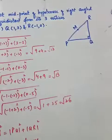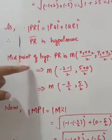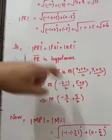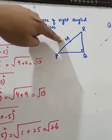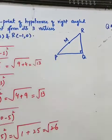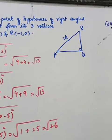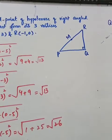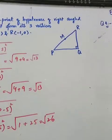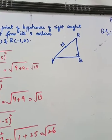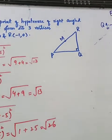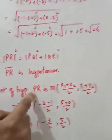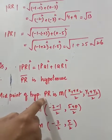Midpoint of hypotenuse PR is M. Midpoint formula apply karte hain: x1 plus x2 by 2, aur y1 plus y2 by 2. Ab is formula mein P aur R ki values put karenge.